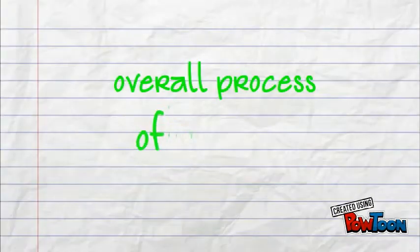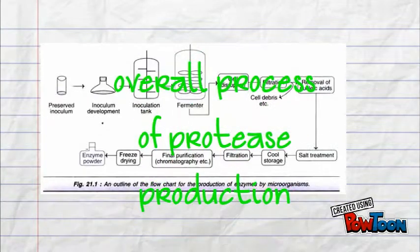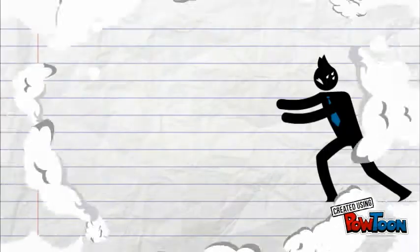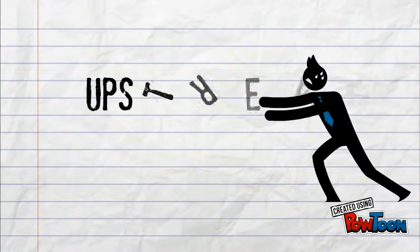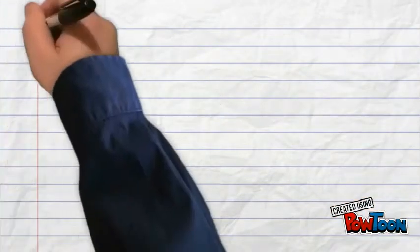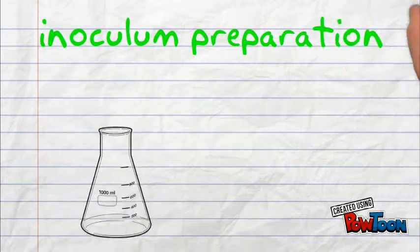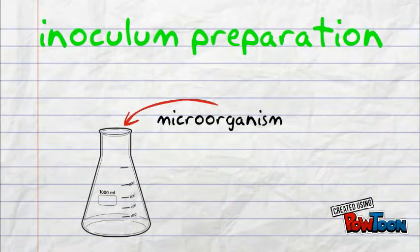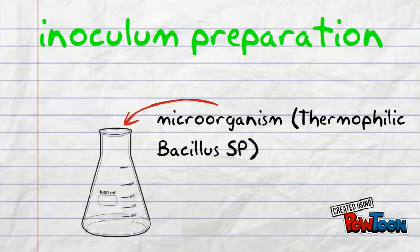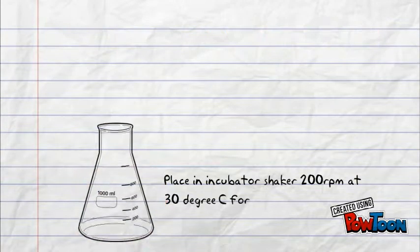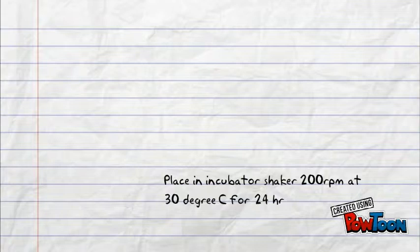The overall process of microbial protease production begins with the upstream process. The process starts with inoculum preparation, where medium and microorganism are placed into a conical flask. The conical flask is then placed into an incubator shaker at 200 rpm for 24 hours at 30 degrees Celsius.